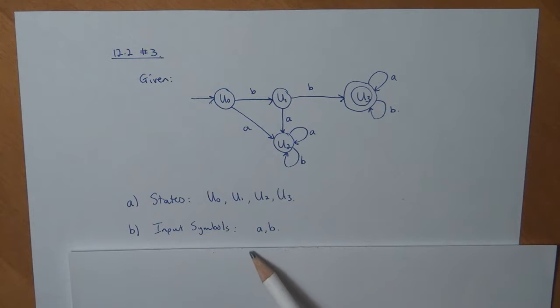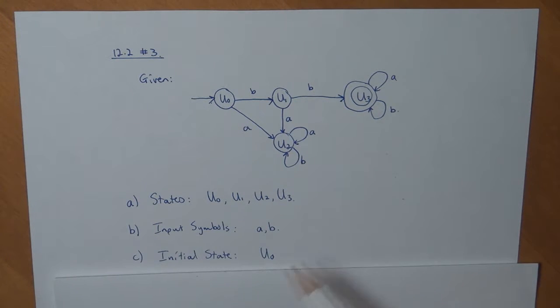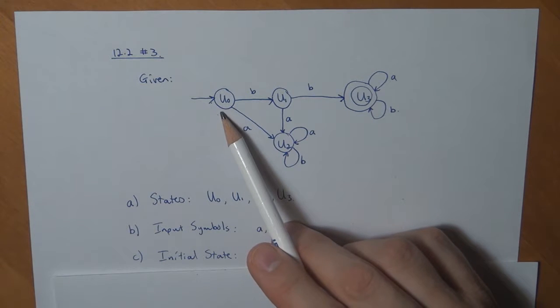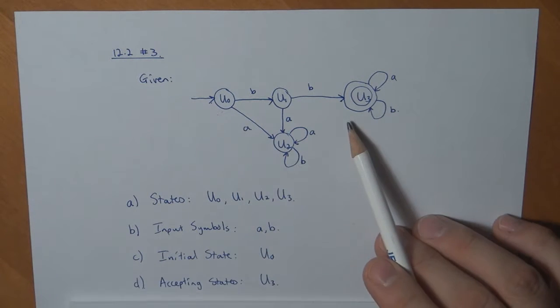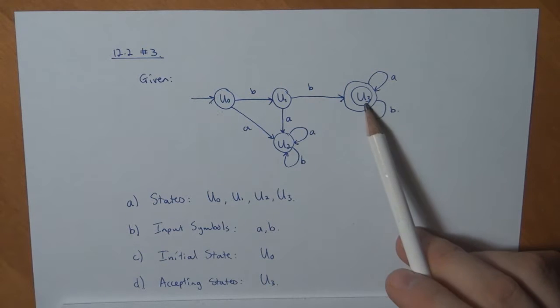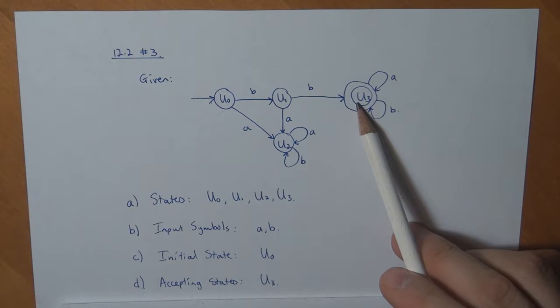The input symbols are A and B. The initial state is over here, U0, and the accepting states are U3.